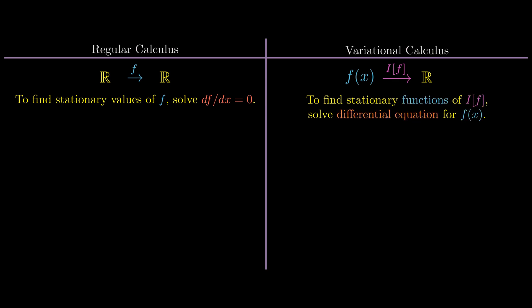In the examples we showed the functional was often written as an integral involving the function or its derivative. And in general we can write the functional I as the integral of some capital F of the function y, its derivative dy/dx, and x. To make this integral stationary we need to solve some differential equations. Another name for these differential equations is the Euler-Lagrange equations, the variational calculus analog of df/dx = 0.